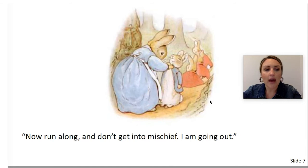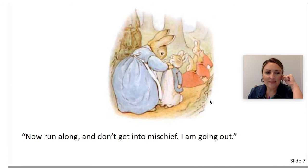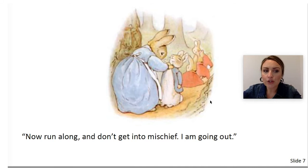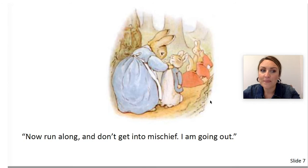Now run along and don't get into mischief. I am going out. I read one of our vocabulary words — can you tell me which word it is? When you hear the vocabulary word, hop like a rabbit. Now run along and don't get into mischief. Yes, mischief. Can you tell what mischief means from this sentence? Mrs. Rabbit told her children not to get into mischief, so it must not be a good thing. Mischief is playful misbehavior, troublemaking — doing something bad. Can you think of an example of mischief? I'm thinking that whispering to your neighbor while your teacher is talking would be an example of mischief.